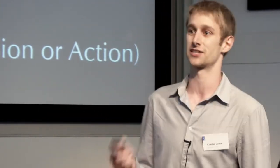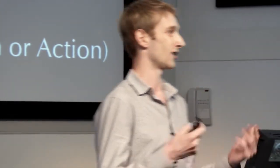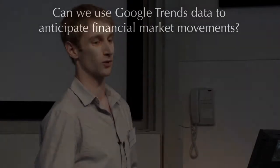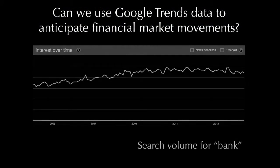There are a lot of different types of events that people could care about, but we chose to study financial market movements because there's an abundance of data, they're very easily quantified, and people are interested in them generally. So this is the big question: can we use Google Trends data to anticipate financial market movements?